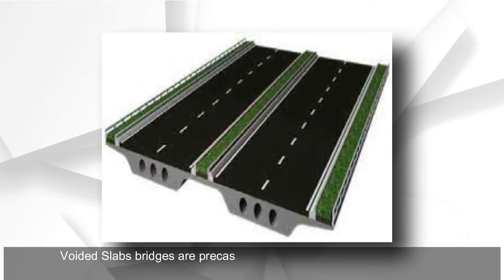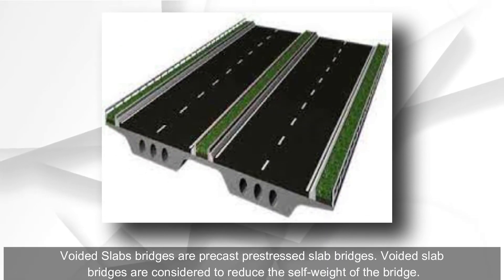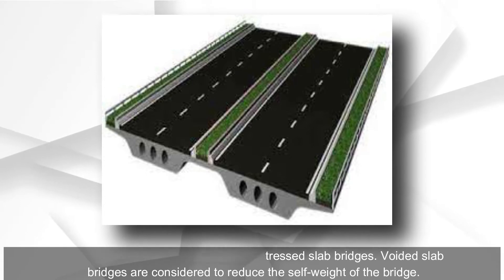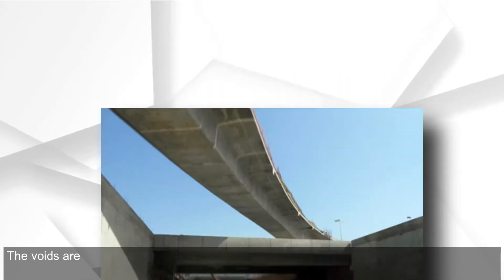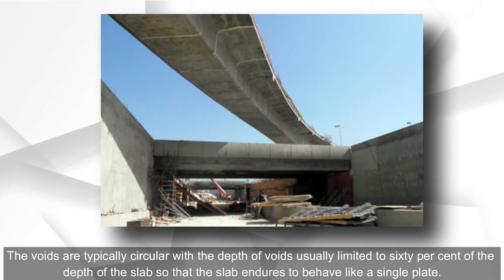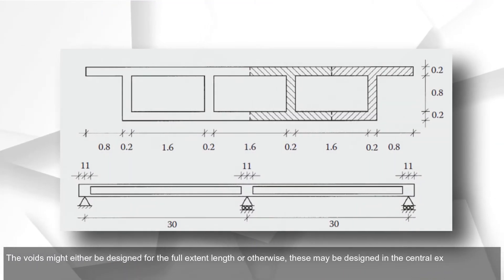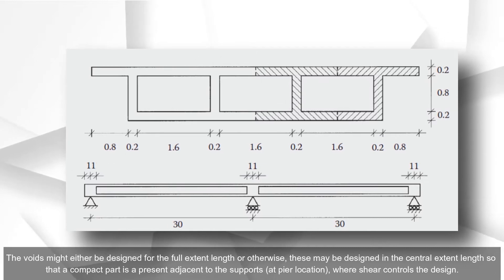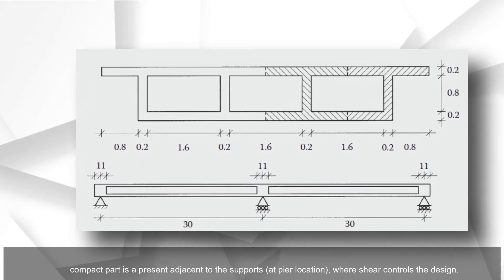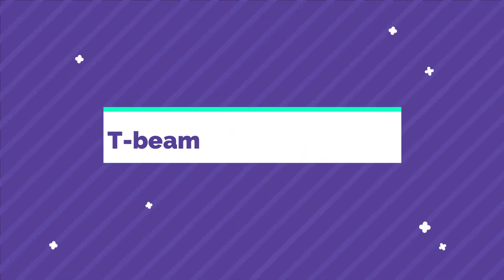Voided slab bridges are precast prestressed slab bridges considered to reduce the self-weight of the bridge. The voids are typically circular, with depth usually limited to 60 percent of the slab depth so that the slab continues to behave like a single plate. The voids may be designed for the full extent length or only in the central extent, so that a solid part is present adjacent to the supports at pier locations where shear controls the design.